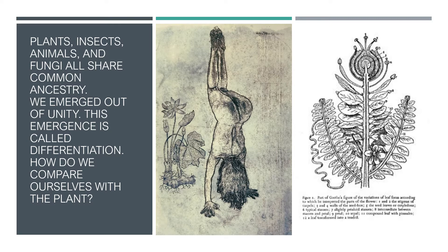Plants, insects, animals, and fungi all share common ancestry — we emerged out of unity. This emergence is called differentiation. When we're talking about plant communication and working at a deeper intuitive level with plants, it's very important, because there are ways of knowing that Western science doesn't acknowledge very well — ways that are more involved in indigenous cultures and different types of cultures that have worked very successfully with plant medicine throughout history.